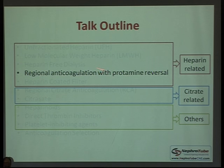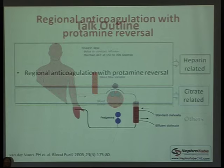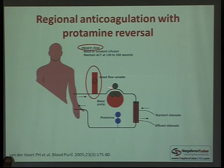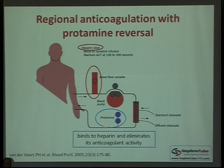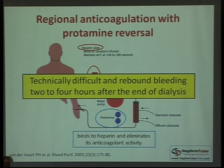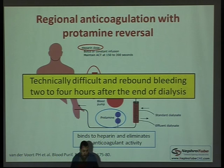Regional anticoagulation with protamine reversal involves using high-dose heparin before the blood pump and filter, then administering protamine (the heparin antidote) as blood returns to the patient. However, this method is technically difficult, and rebound bleeding occurs about two to four hours after dialysis ends because the reticuloendothelial system cleaves the protamine-heparin complex, releasing heparin back into the patient's circulation. It is considered a historical method and is no longer used.